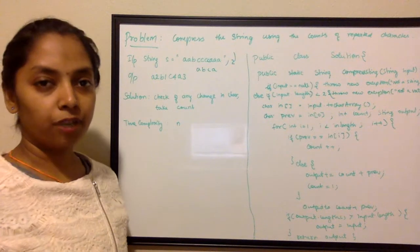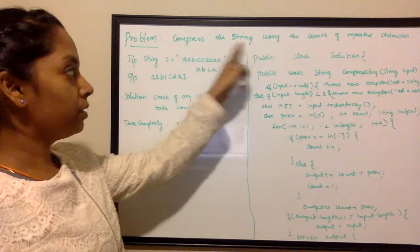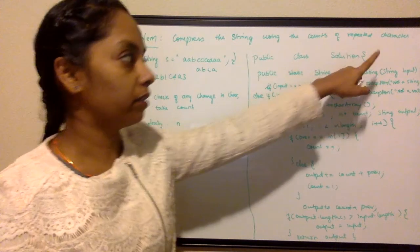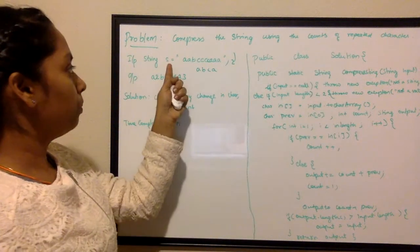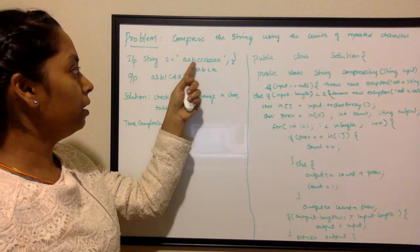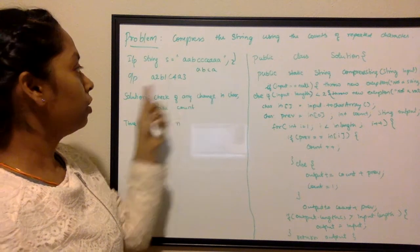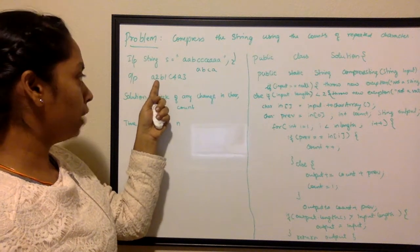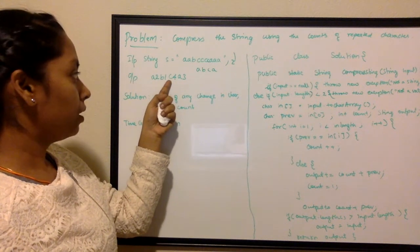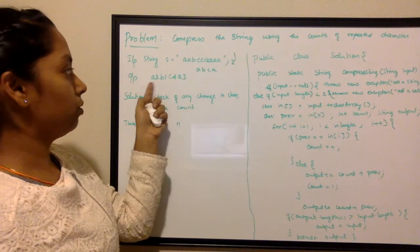Today we're going to look at a problem: compress the string using the counts of repeated characters. So if the input is 'a a b c c c c a a', the output should be: a appears 2 times, b appears 1 time, c appears 4 times, and a appears 3 times.